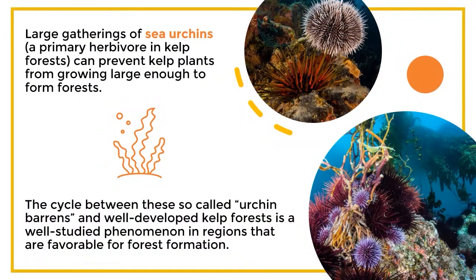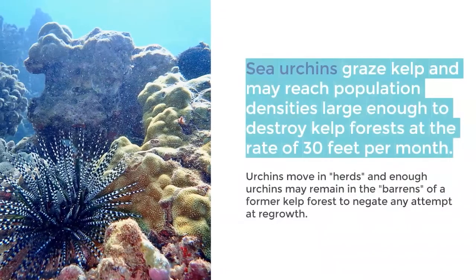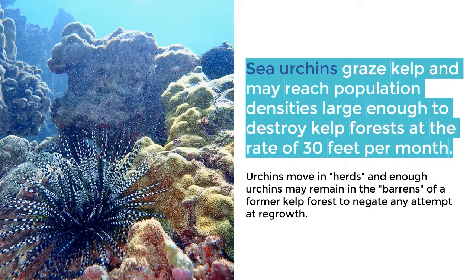Large gatherings of sea urchins, a primary herbivore in kelp forests, can prevent kelp plants from growing large enough to form forests. The cycle between these so-called urchin barrens and well-developed kelp forests is a well-studied phenomenon in regions favorable for forest formation. Sea urchins graze kelp and may reach population densities large enough to destroy kelp forests at the rate of 30 feet per month. Urchins move in herds, and enough urchins may remain in the barrens of a former kelp forest to negate any attempt at regrowth.